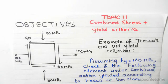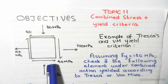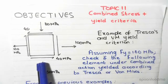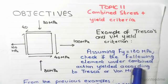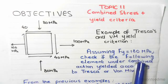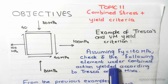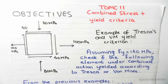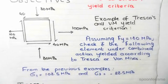This is an example of Tresca's and von Mises yield criterion under combined stresses. We're given this element as we've seen previously in the examples. Assuming it has a yield stress of 180 megapascals, check if the following element under combined action yielded according to Tresca or von Mises.